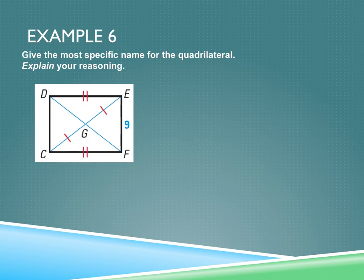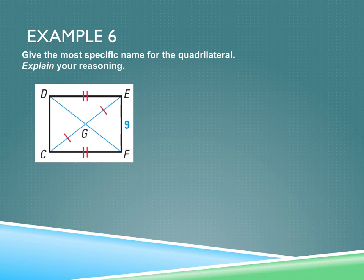One last example — give the most specific name. We cannot give a specific name here, so we would just call this a quadrilateral, because it's got four sides but we don't have enough information. We don't know that both diagonals have been bisected, and we don't know enough about the sides. To show something's a parallelogram, we'd need one pair that's both congruent and parallel, or both pairs congruent. There's just not enough information, so all we can say is that it's a quadrilateral. This was just an overview of the chapter. Your homework tonight is the chapter review.